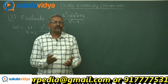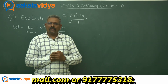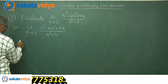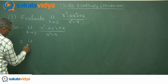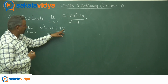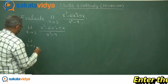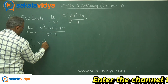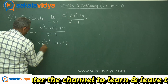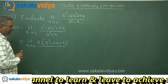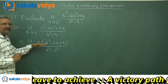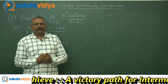After cancelling the common factor, we substitute the limit so that the limit of the function can be evaluated. Now, this can be written as limit x tends to 3. From the numerator, we take out x common, giving us x times [x² - 6x + 9]. The denominator x² - 9 can be written as x² - 3², which is in the form a² - b².